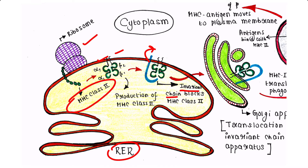The alpha and beta chains are produced inside the RER and they are complexed with a protein known as the invariant chain. This invariant chain blocks the MHC class 2 molecule from binding cellular peptides from the endogenous pathway, such as those that would be loaded onto class 1 MHC.